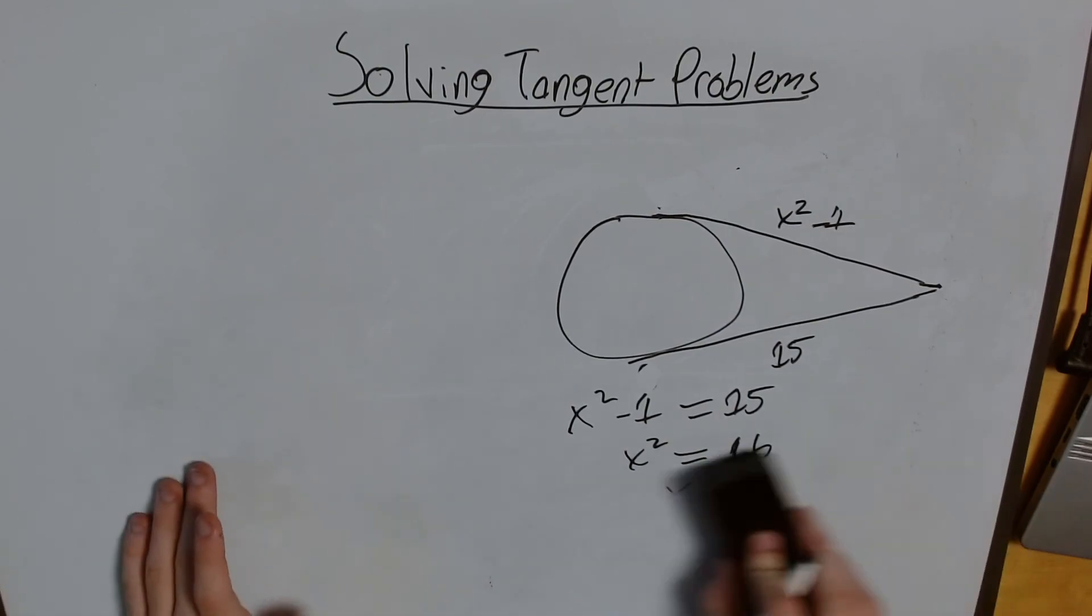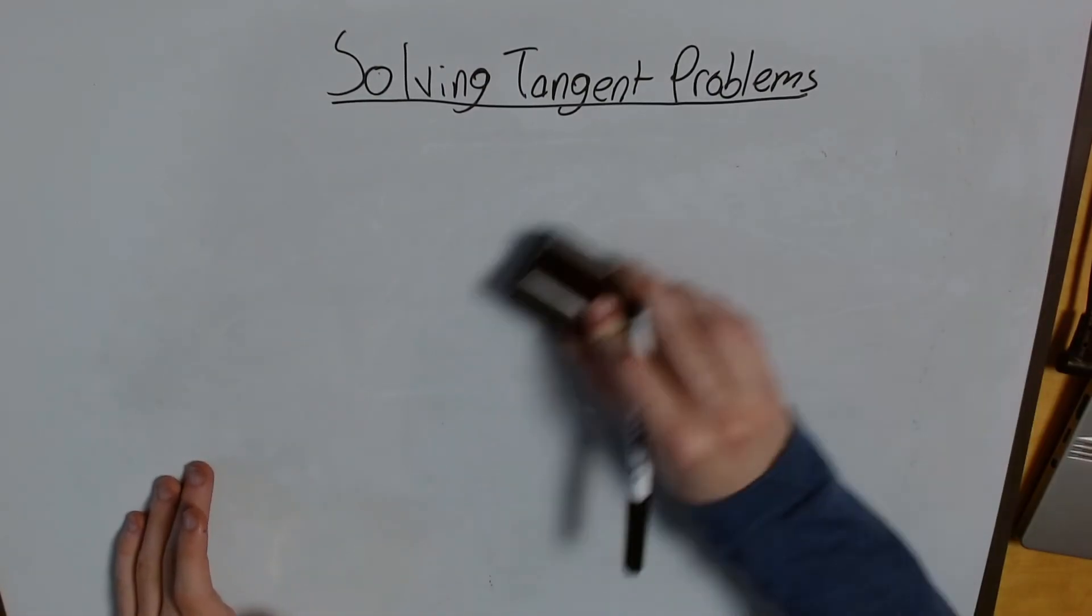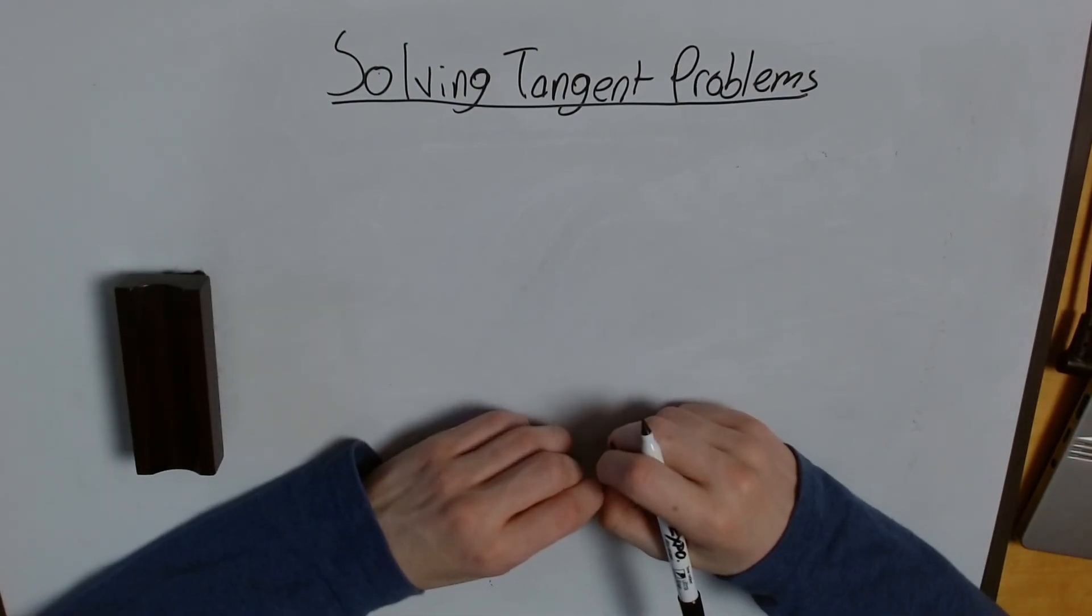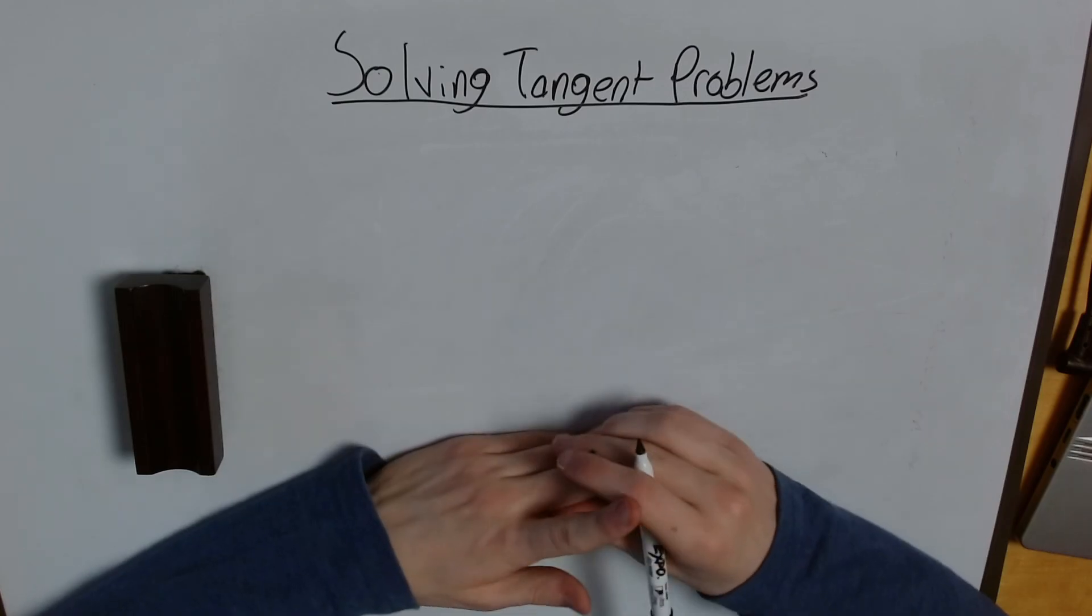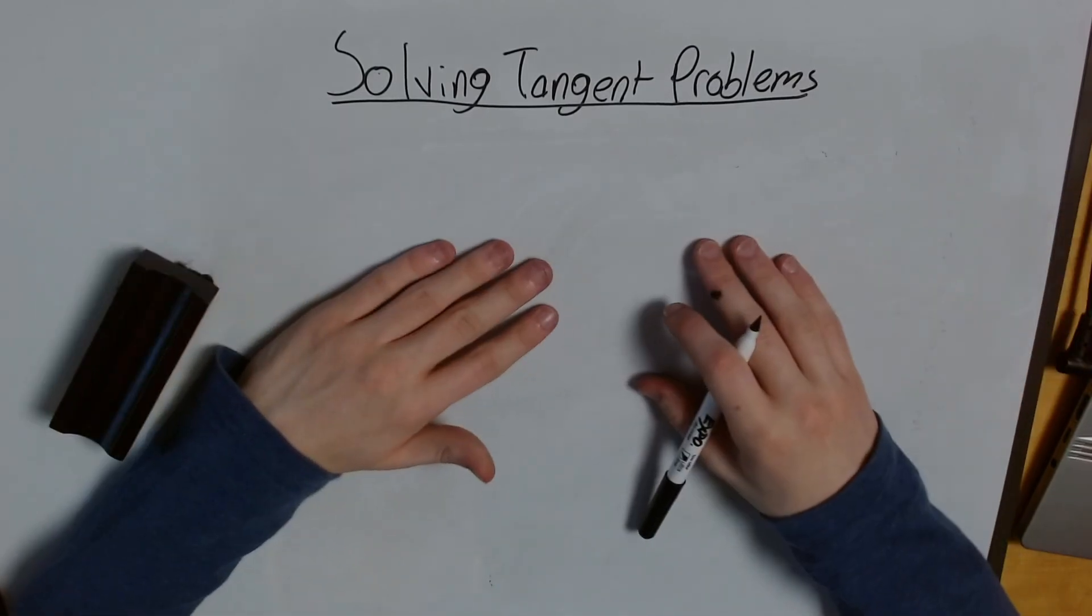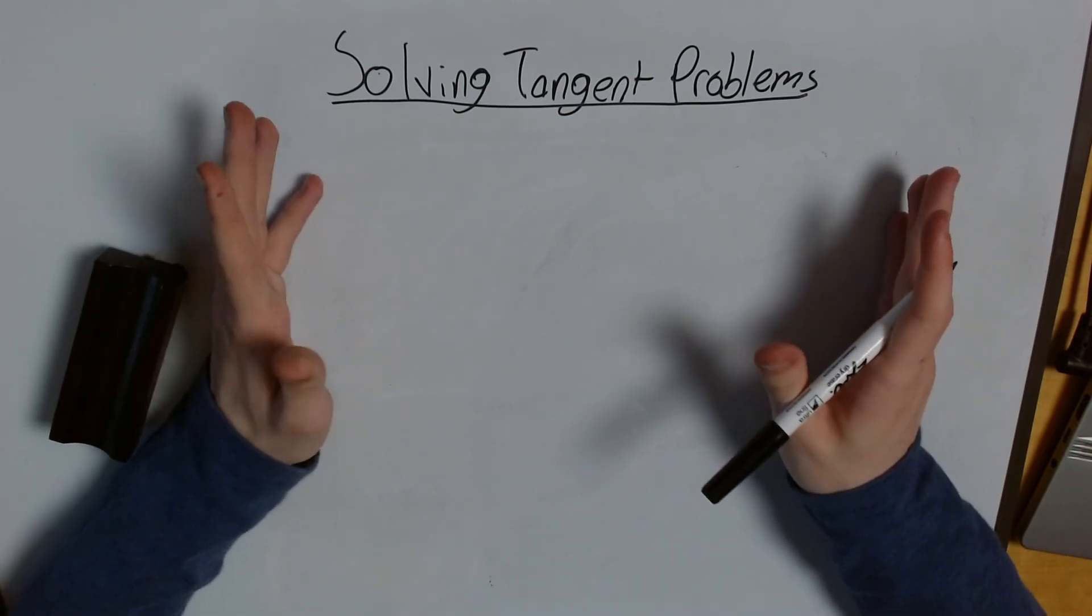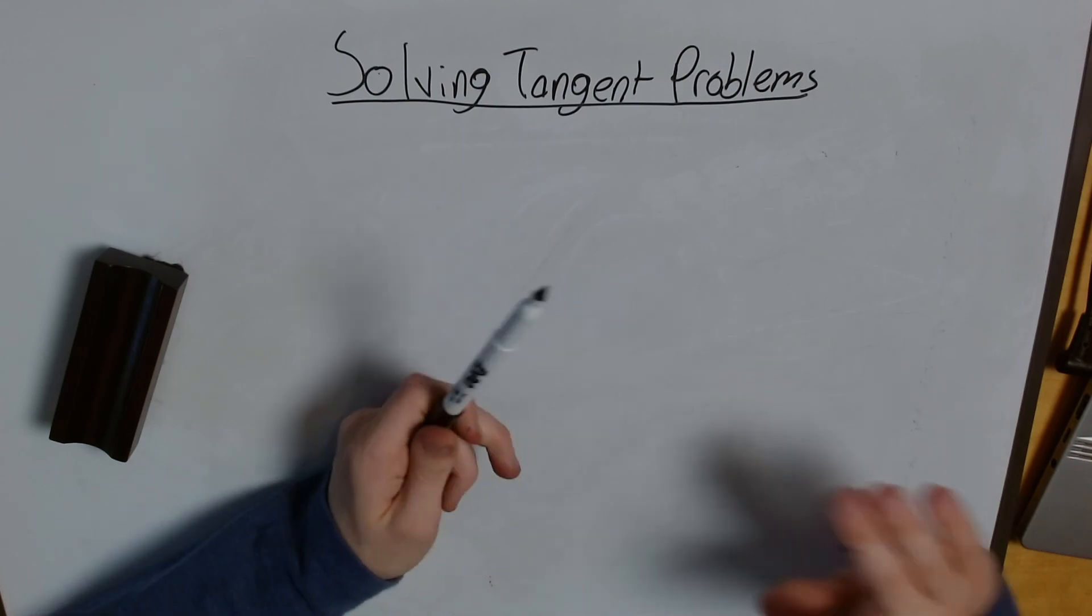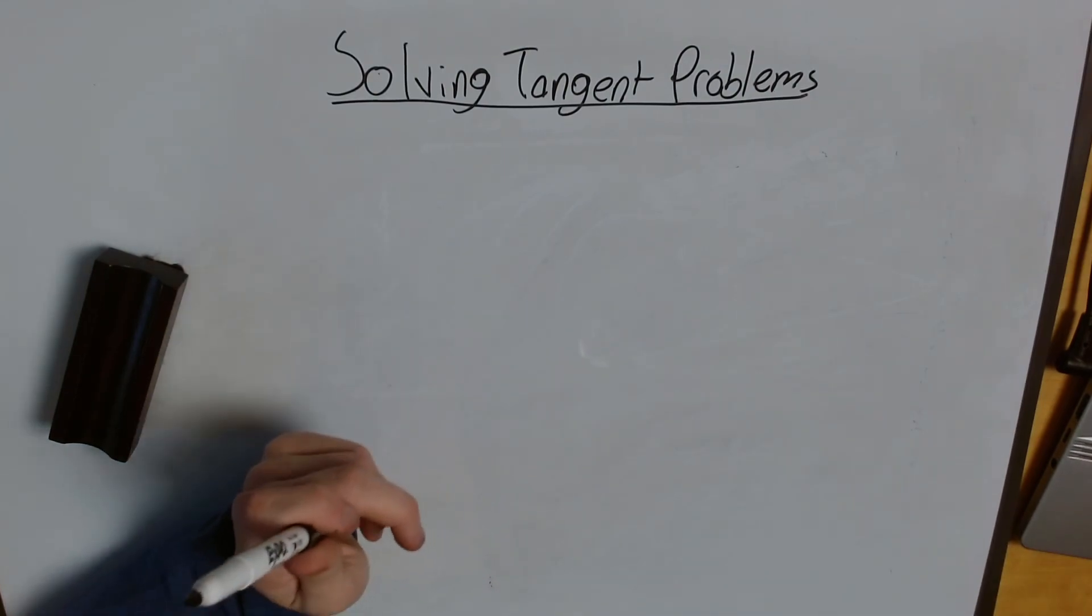So those are the core properties of tangents, two pretty simple ones. Tangents, points of tangents, are perpendicular to radii, and if I have two tangents that intersect at a single point, their lengths from that point of tangency to that point are going to be equal. That's all. I hope you found that helpful, and I hope you have a great day.